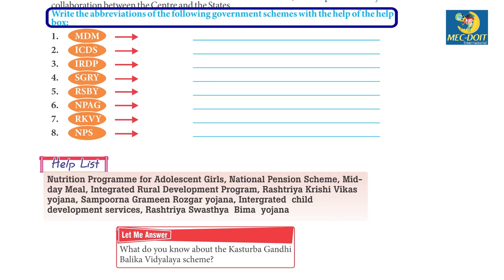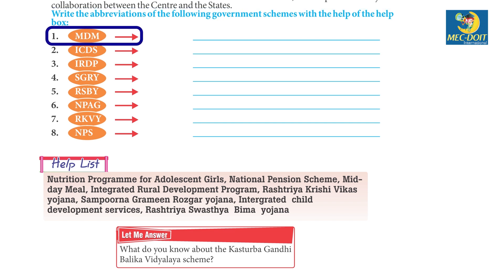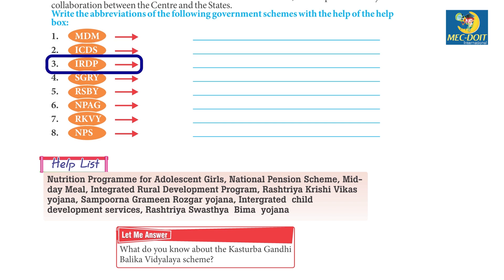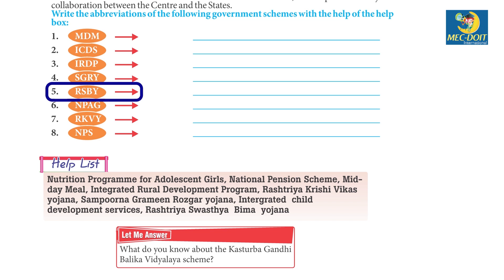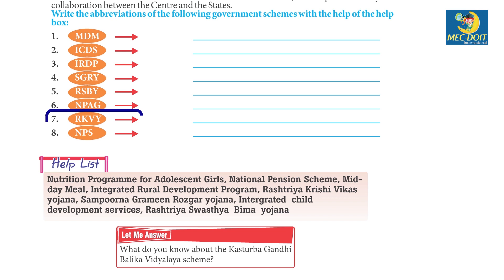Write the abbreviations of the following government schemes with the help of the help box. 1. MMB - Mid-Day Meal. 2. ICDS - Integrated Child Development Services. 3. IRDP - Integrated Rural Development Program. 4. SGRY - Sampoorn Grameen Rozgaar Yojna. 5. RSBY - Rashtriya Swasthya Bheema Yojna. 6. NPAG - Nutrition Program for Adolescent Girls.